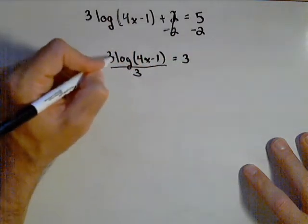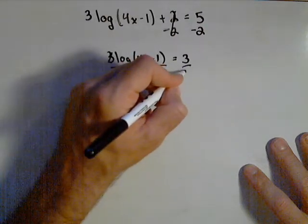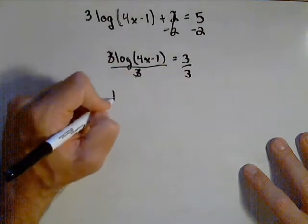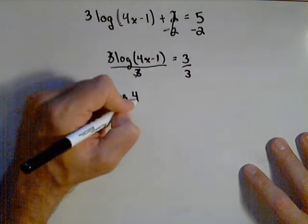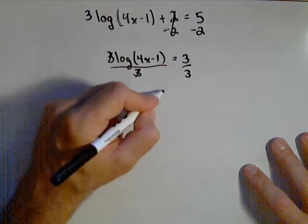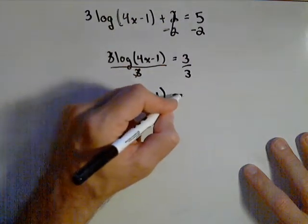Now we'll divide both sides by 3, and so we get log(4x - 1) equals 1.